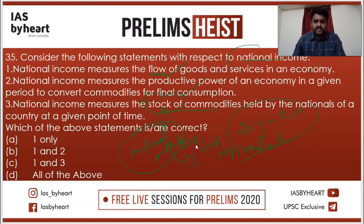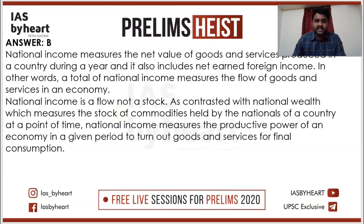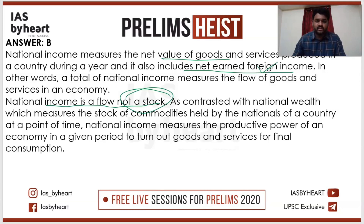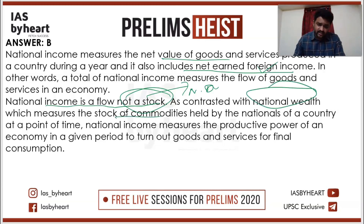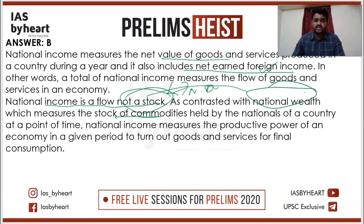Which of the above statements are correct? First and second statements are correct. Answer is B — one and two only; the third statement is wrong. National income measures the net value of goods and services produced in a country during a year. It includes net earned income also. National income is a flow, not a stock. The stock means national output. As contrast to national wealth, which measures the stock of commodities — we use the term national wealth when counting how many stocks exist in India.